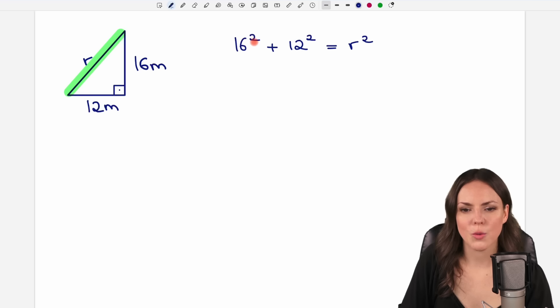We have 16 squared here, which equals 256. We add 12 squared, which equals 144. On the other side, we still have our R squared. If we add these numbers, we get a result of 400.